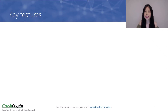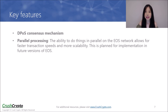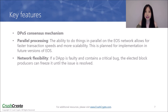I will now go over some of the key features of EOS. The first is its DPoS consensus mechanism, which I just talked about. EOS will also feature the ability to do things in parallel, allowing for faster transaction speeds and more scalability — this is planned for implementation in future versions of EOS. Another feature is network flexibility: if a dApp is faulty and contains a critical bug, the elected block producers can freeze it until the issue is resolved.